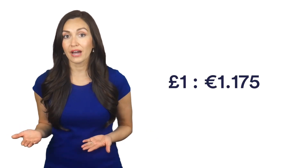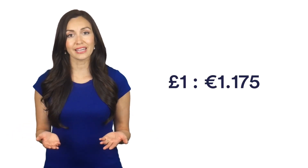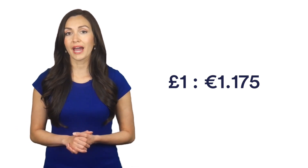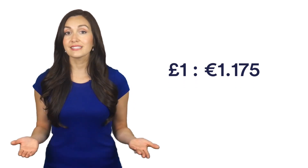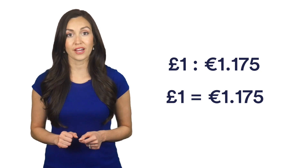Currency conversions can sometimes seem daunting, but if you know how to approach them, they become a lot easier. Imagine you are told that the exchange rate for pounds to euros was 1 pound to 1.175 euros, and you are asked to calculate how many pounds you could exchange for 1 euro. Saying 1 pound to 1.175 euros is the same as saying 1 pound equals 1.175 euros.